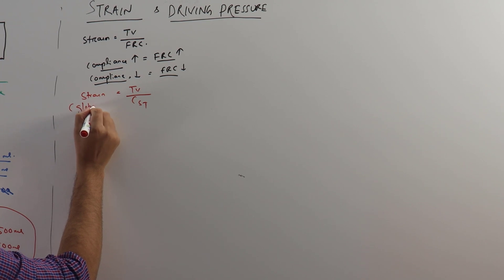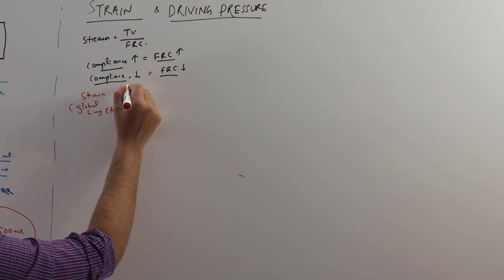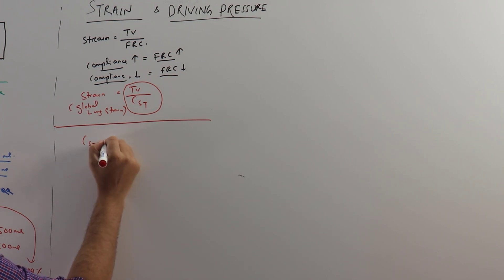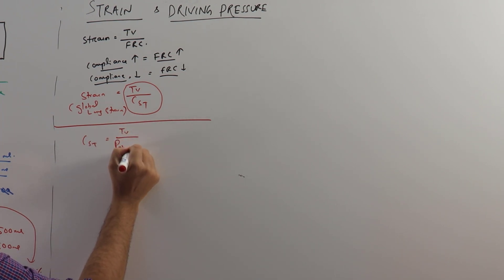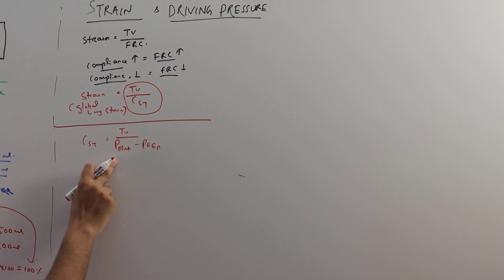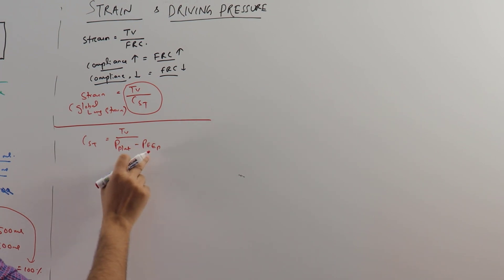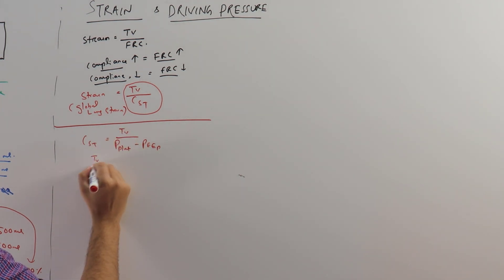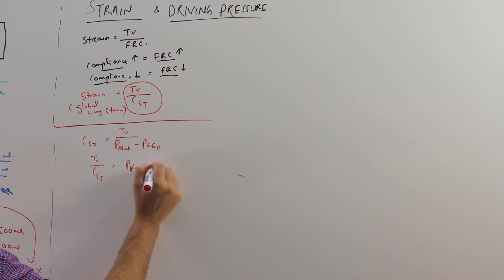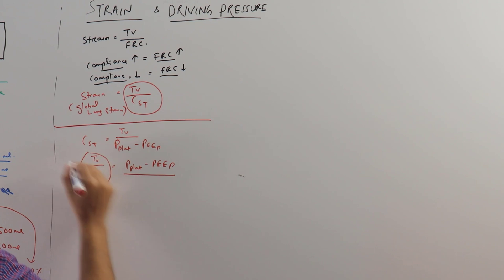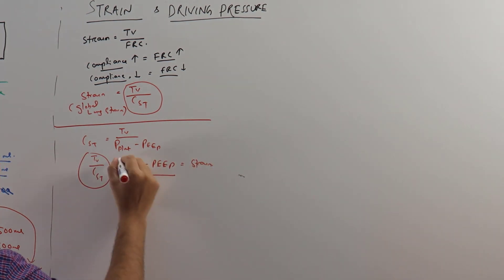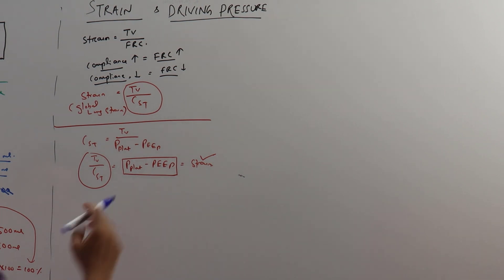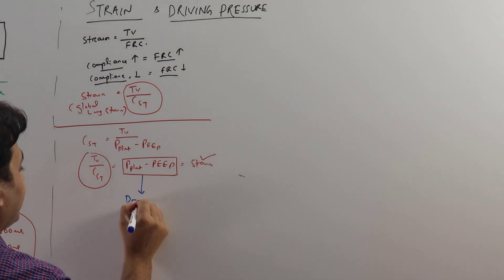This is very easily measured. We have to remember the formula: compliance equals tidal volume divided by (P_plat minus PEEP), where P_plat is the plateau pressure in the lungs when there is no flow, and PEEP is the pressure that remains in the lungs at all times. So TV divided by static compliance equals P_plat minus PEEP, and this is actually the strain. By measuring P_plat minus PEEP at the bedside, we can measure the strain — and this is popularly called the driving pressure.